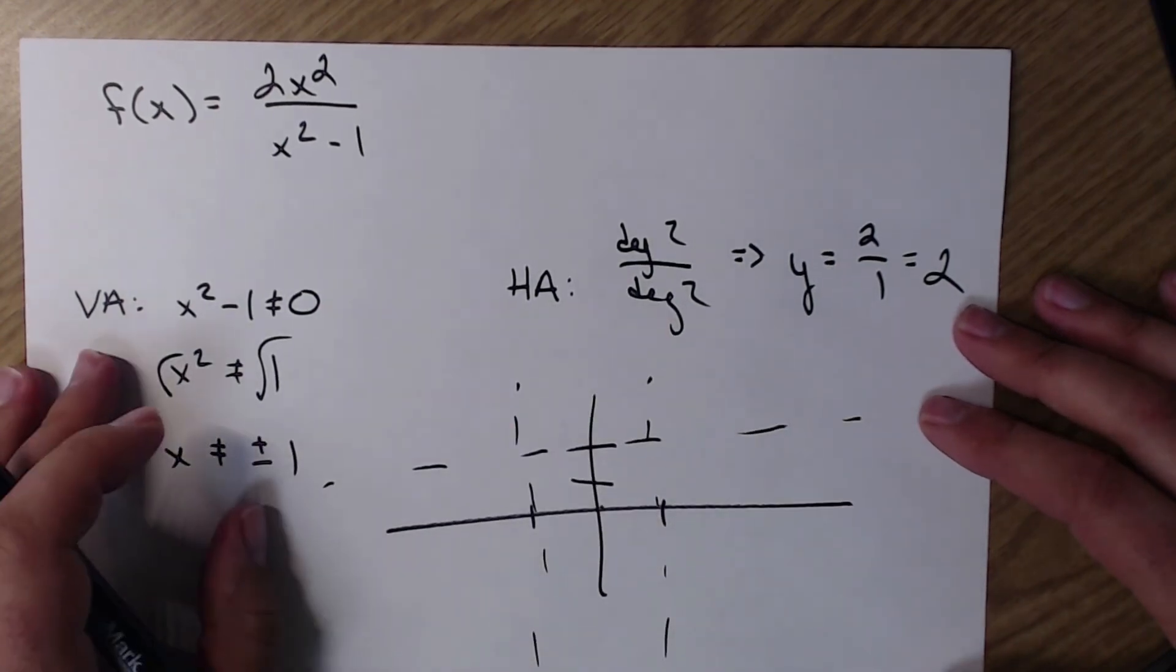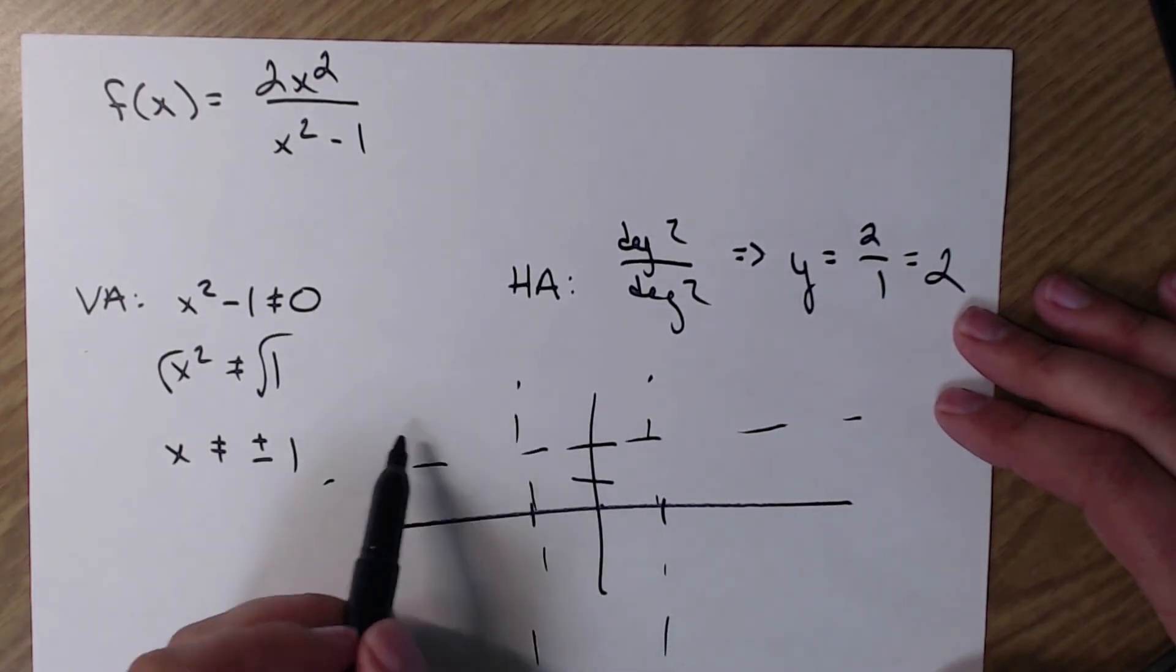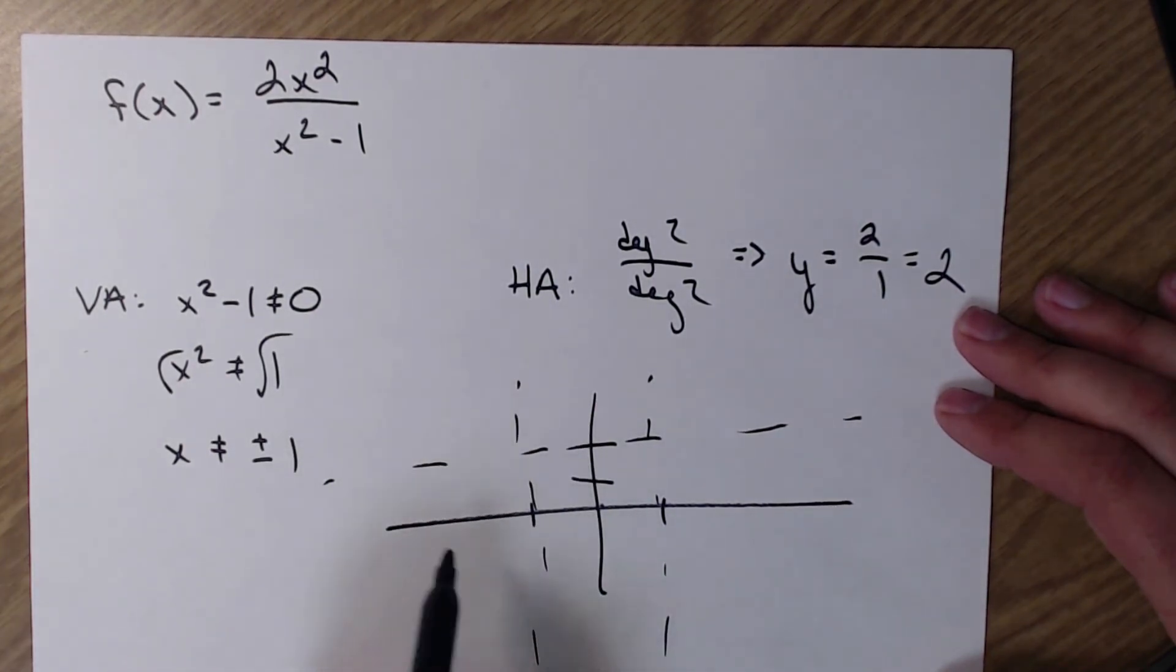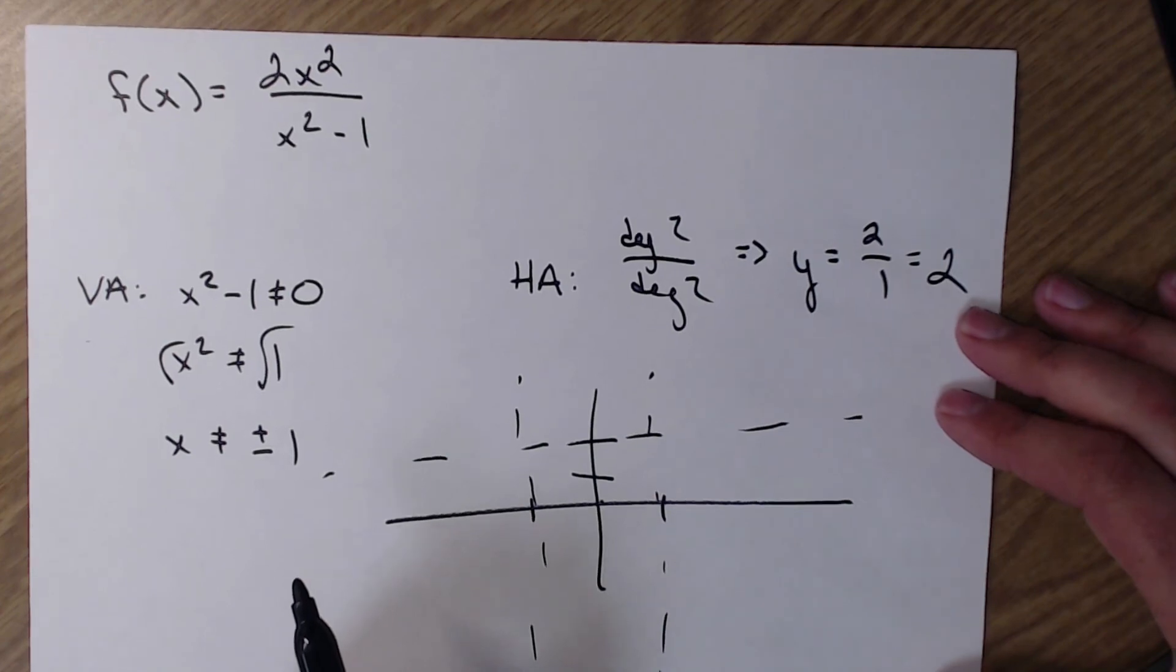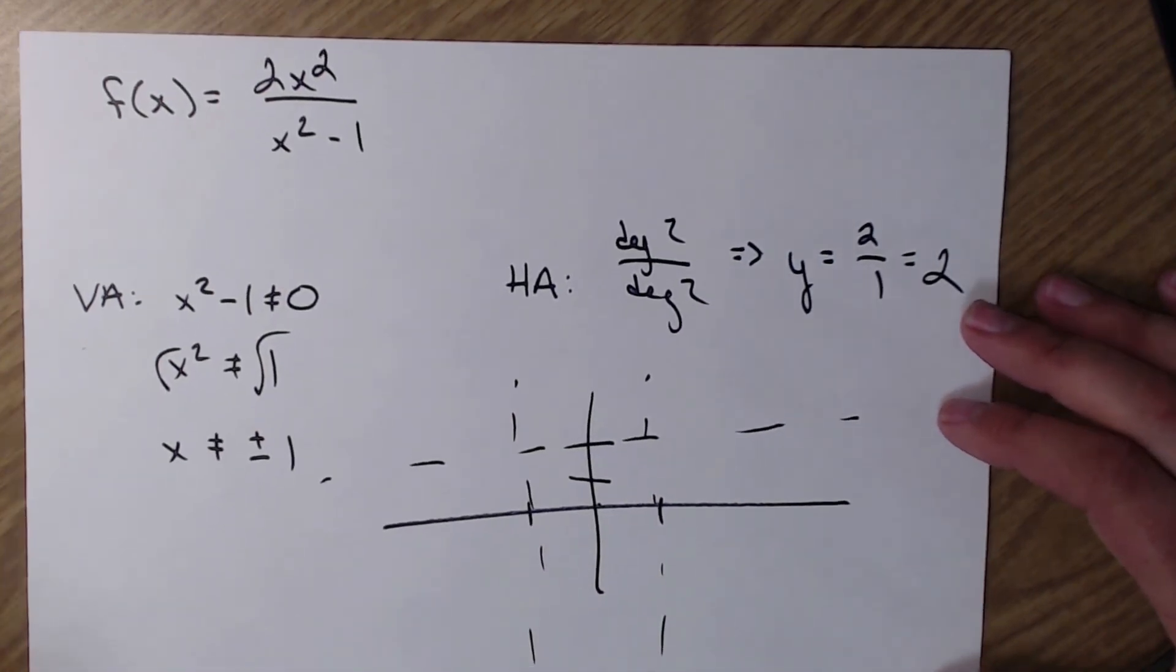And then again, I would plug in numbers from each section and figure out if they were above the horizontal asymptote or below. Every so often we do cross it. But we don't deal with that a whole lot in Algebra 2. But that's in general what we're looking for.